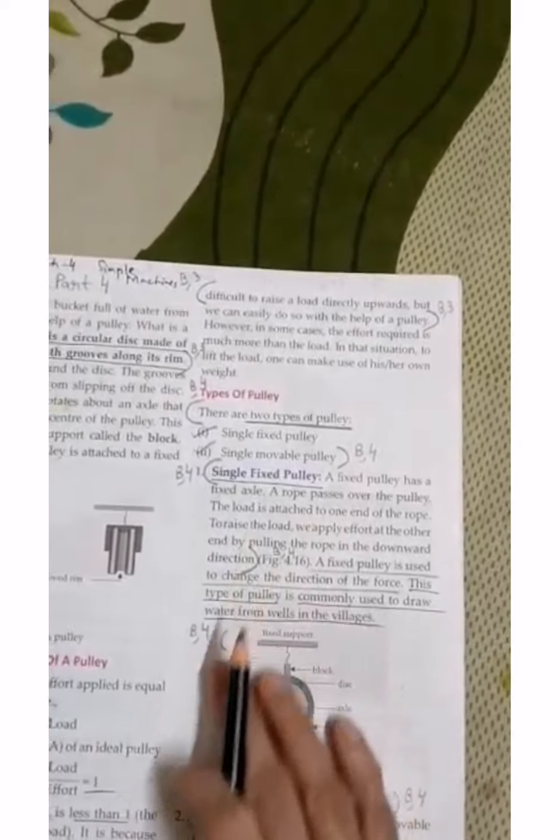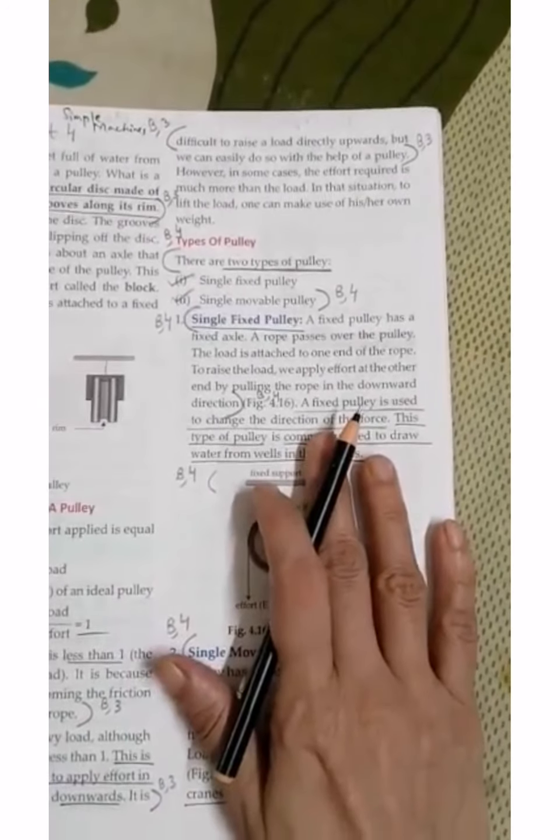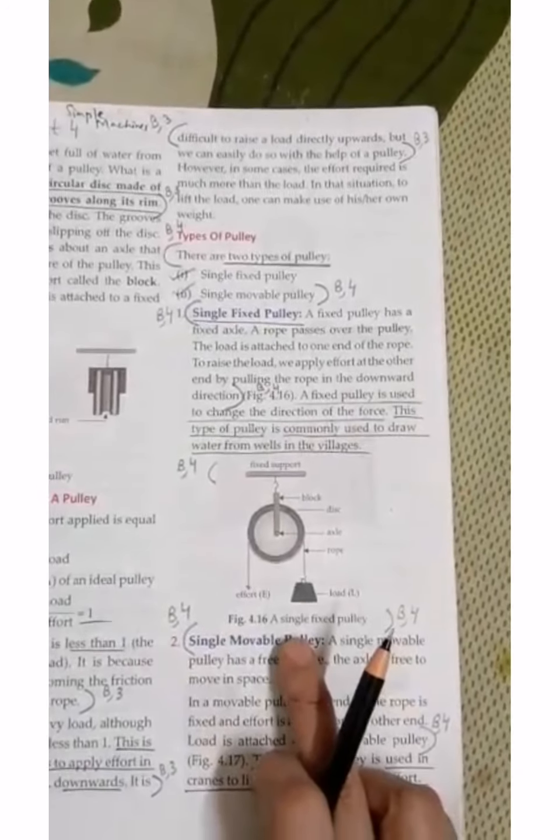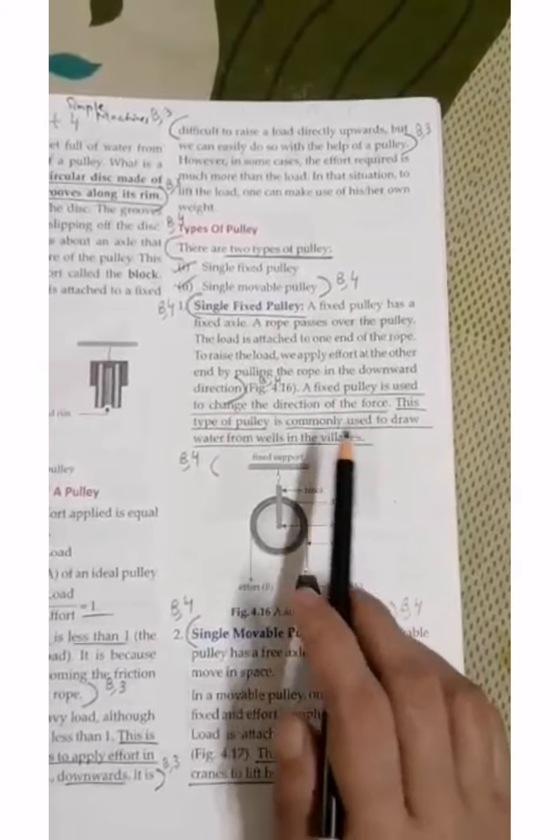Two types of pulleys are given here in your book: Single Fixed Pulley and Single Movable Pulley. The figure is given here - Figure 4.16, a Single Fixed Pulley. What is a Single Fixed Pulley?